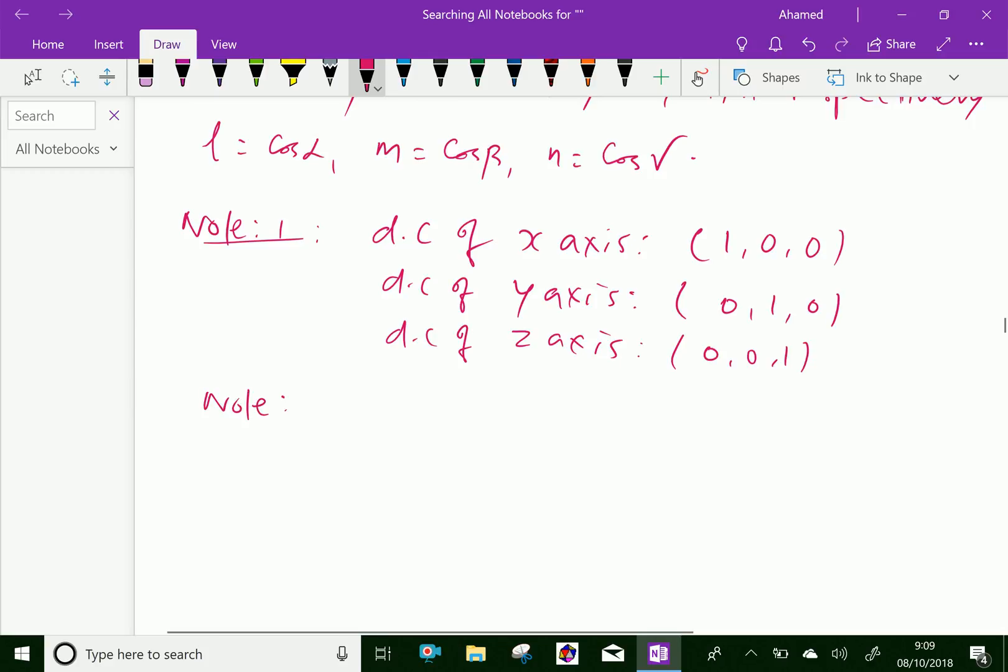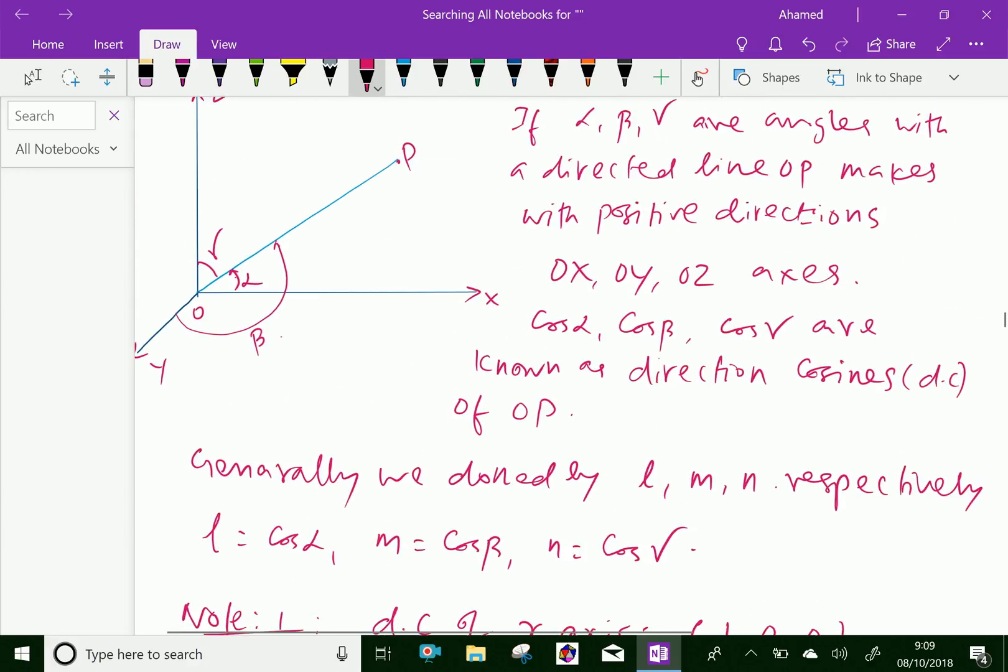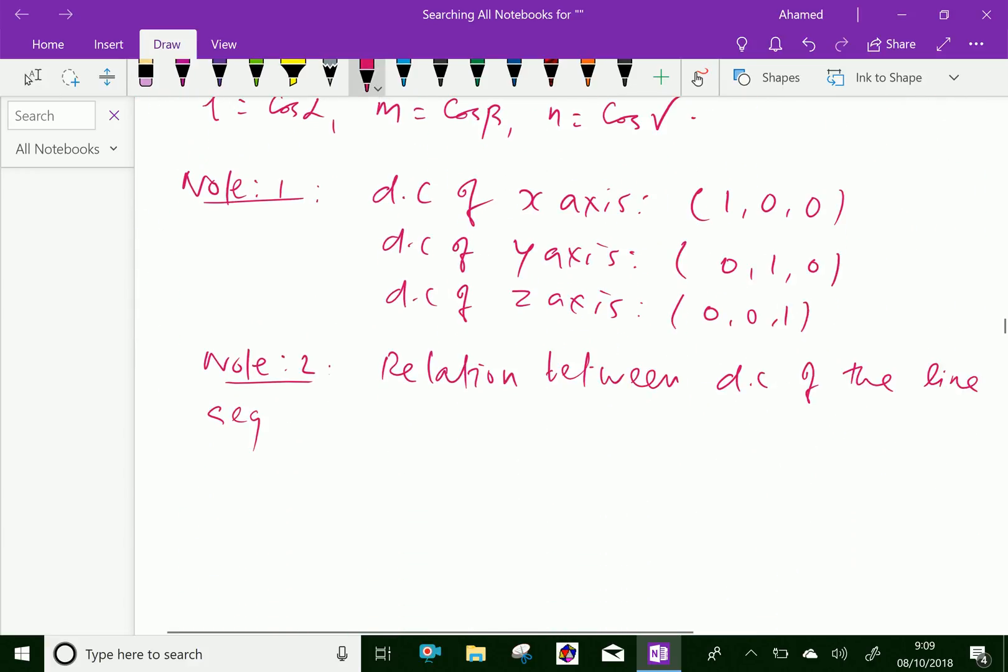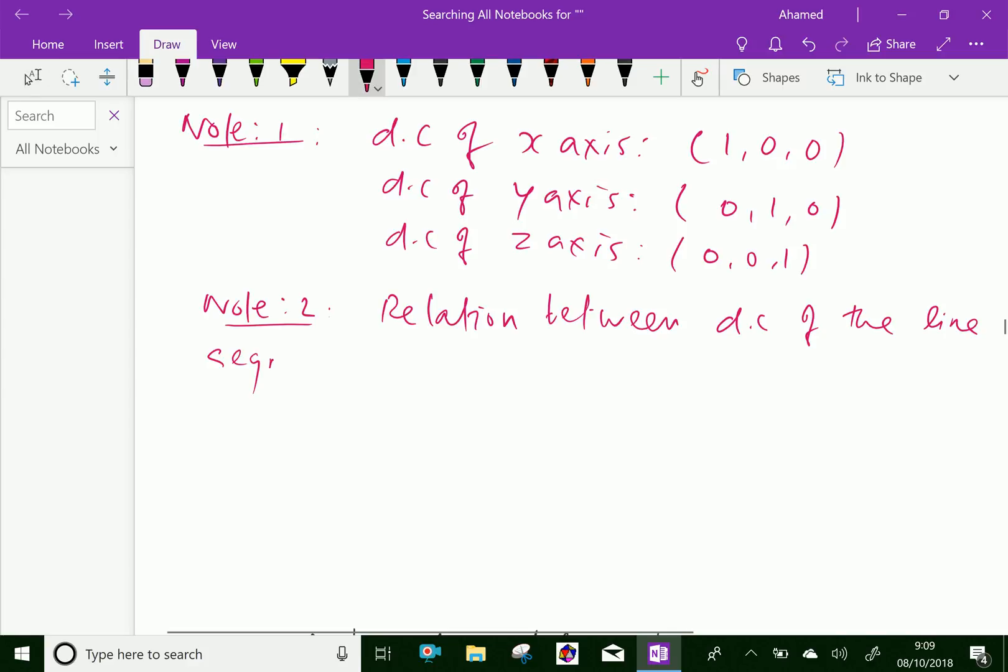Note the relation between DC of the line segment. That is, L squared plus M squared plus N squared equals 1.